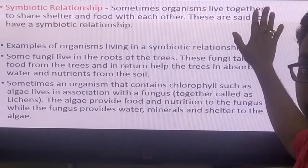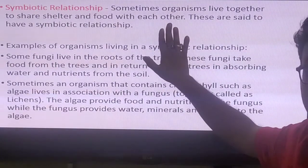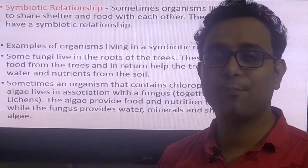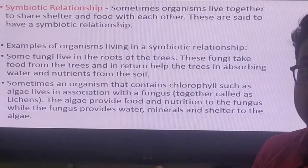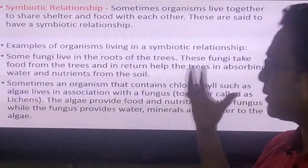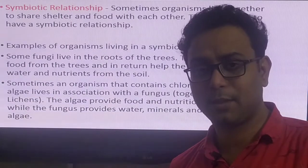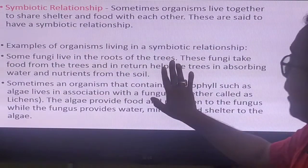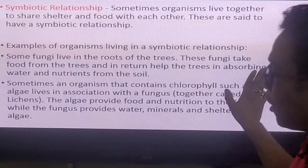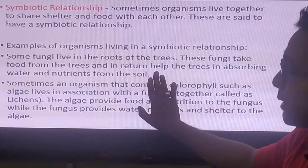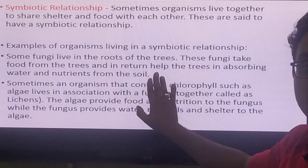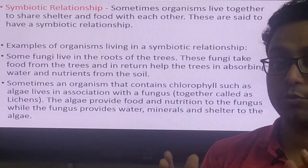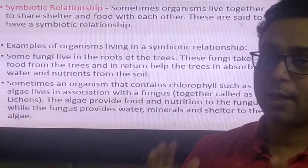Symbiotic relationship means organisms live together to share shelter and food with each other, and both are benefited together — that is called a symbiotic association. Two common examples are lichens and Rhizobium. Now, another important example is mycorrhizae: some fungi live in the roots of a tree, take food from the tree, and in return help the tree absorb water and nutrients from the soil. In mycorrhizae, the symbiotic relationship occurs between the roots of higher plants and fungi.